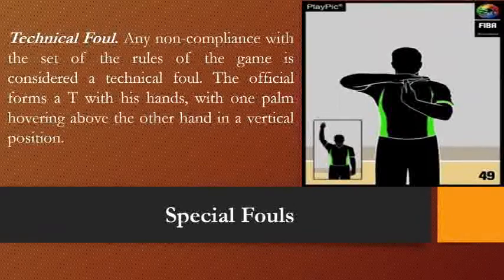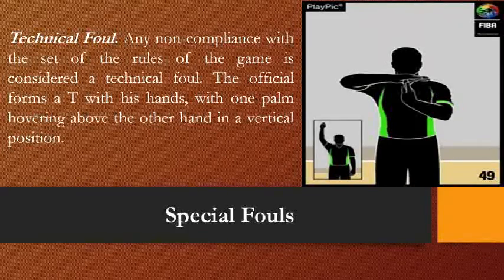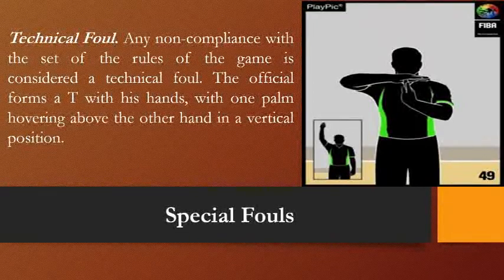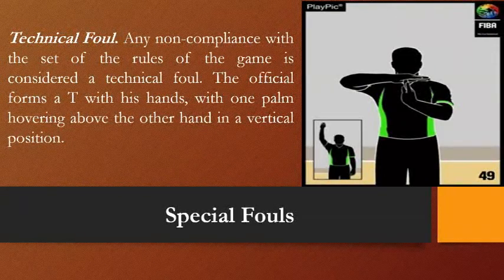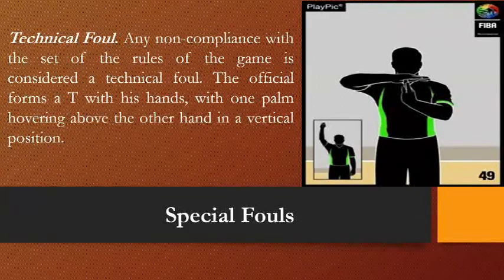Another special foul is technical foul. Any non-compliance with the rules of the game is considered a technical foul. The official forms a T with hands, with one palm hovering above the other in a vertical position. The referee uses a clenched fist and signals the technical foul. Any player in the game, bench personnel, or coach will be called for a technical foul if they fail to follow the rules.